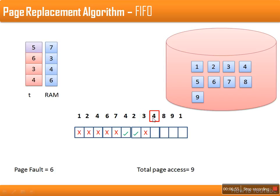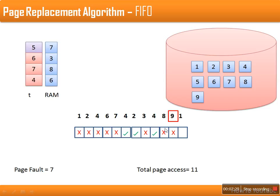Page four is already available in RAM, so it results in a page hit. Next, page eight is required and is not available in RAM, resulting in a page fault. For replacement, the page with the minimum timestamp is selected and replaced. Page nine is also not available in RAM, resulting in a page fault, and nine replaces the page with the minimum timestamp. Finally, page one also causes a page fault and replaces the corresponding page.